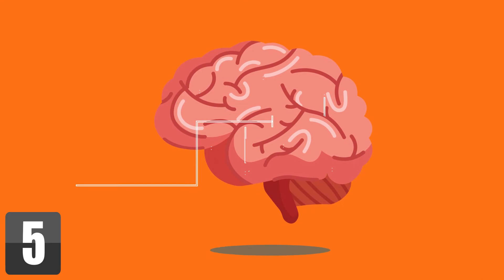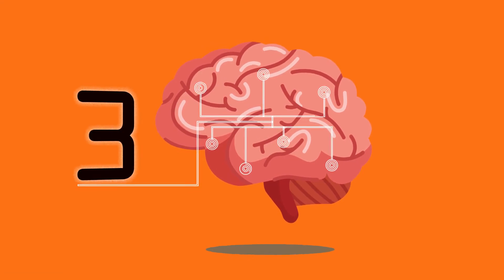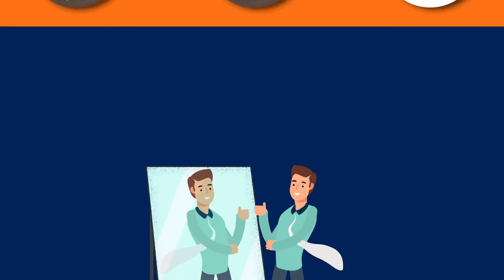Number 5. The human brain cannot look away from 3 things. These 3 things are delicious food, attractive people, and presence of danger.